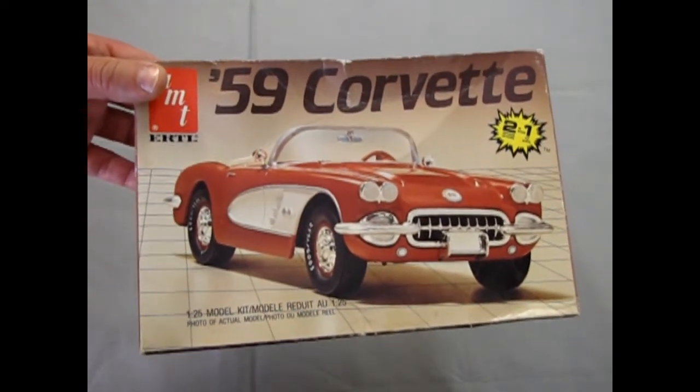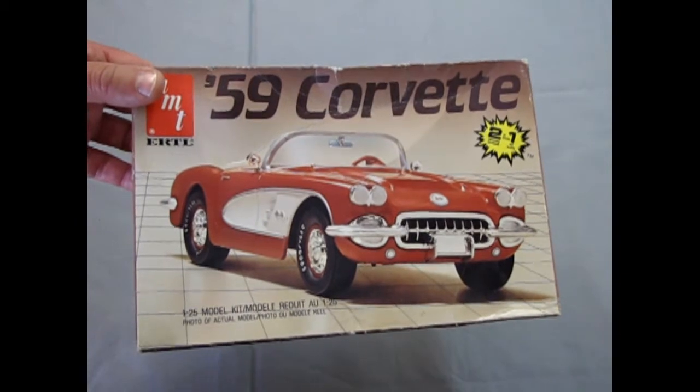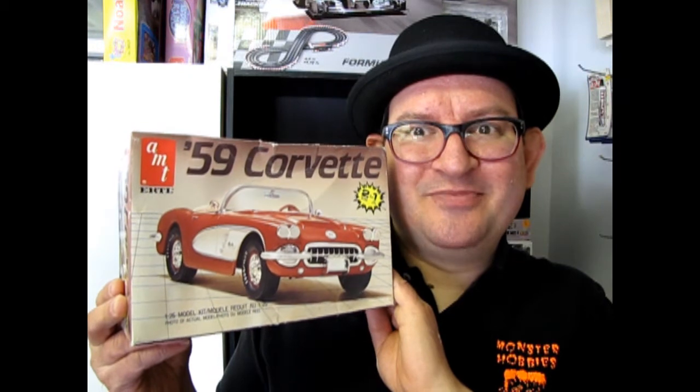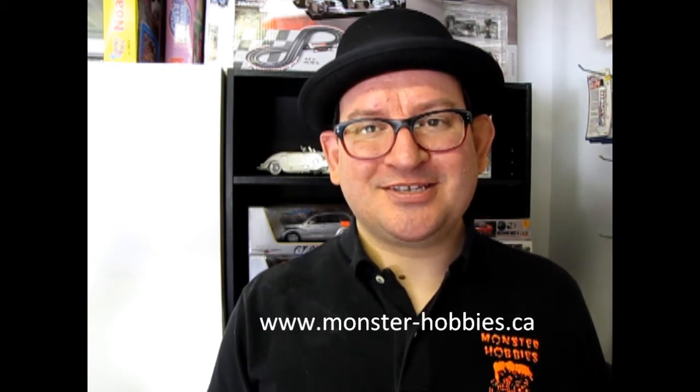That brings us to the conclusion of this 1986 edition 59 Corvette by AMT Ertl. I hope you enjoyed this unboxing of another great old lost classic AMT kit. It's not really that lost because it's been re-boxed as a 60. But still, it says 59 on the box. 59, you'll feel fine. You know what else will make you feel fine? Checking out what other model kits we actually have that you can buy that I can ship to you anywhere on planet Earth. And that would be the great website of www.monster-hobbies.ca.